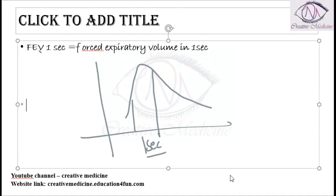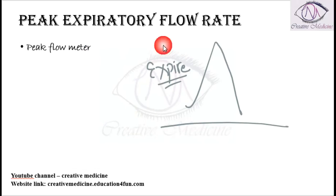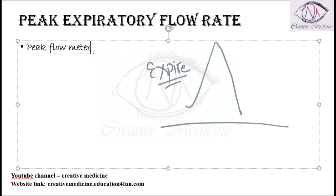Peak flow rates are mainly measured and they are important, especially in asthma and COPD — chronic obstructive pulmonary disease — patients, in order to monitor the therapy and to see whether the disease is controlled properly or not.